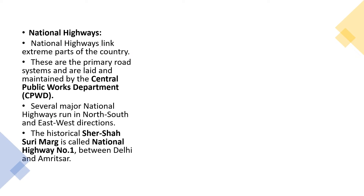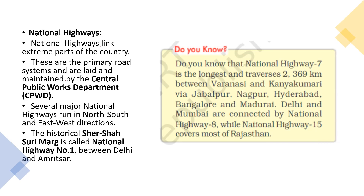Did you know that National Highway 7 is the longest, traversing 2,369 km between Varanasi and Kanyakumari via Jabalpur, Nagpur, Hyderabad, Bangalore, and Madurai? Delhi and Mumbai are connected by National Highway 8, while National Highway 15 covers most of Rajasthan. You should know National Highway 7, 8, and 15 and the areas they cover. Don't skip this — it is very important.